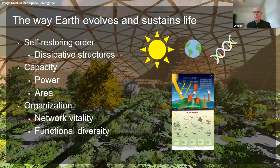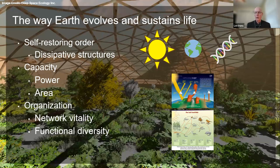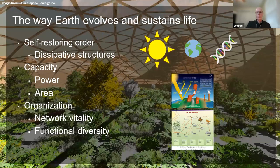The Earth ecosphere evolved and grew in a manner that maximized three traits: self-restoring order, characterized by dissipative structures present in the pre-life Earth; capacity, characterized by solar power pouring down on Earth's surface area; and organization, characterized by network vitality and functional diversity of the resulting living ecosystem. The basal growth forms enable the increase in self-restoring order and capacity through natural selection of the organization that moves the ecosystem further from thermodynamic equilibrium. The basal ecosystem provides minimum human life support, while the augmentational ecosystem capitalizes on access to basal energy sources.